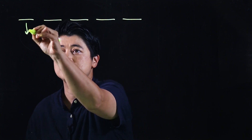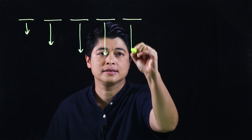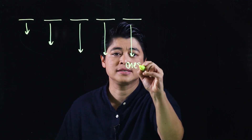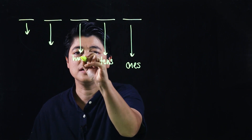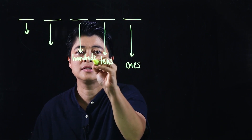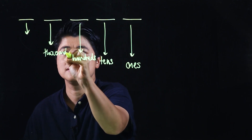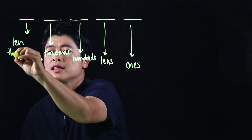Recall from the previous grade levels, we had the same place values. These represent: ones, tens, hundreds, thousands, and ten thousands.